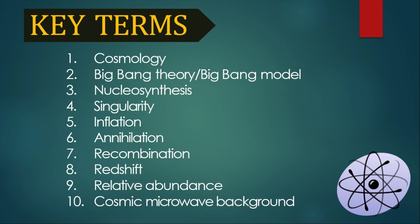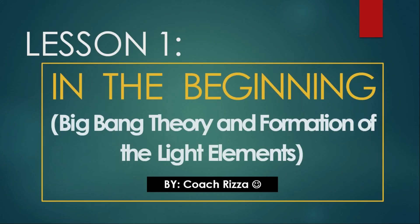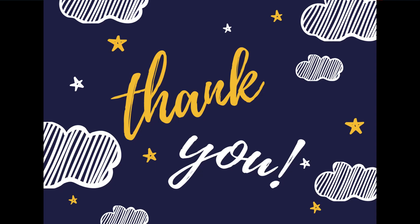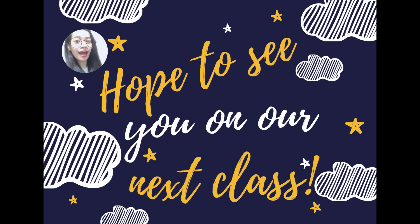Let's have a recap. Today we discussed cosmology and the Big Bang Theory or Big Bang model — how the universe evolved according to the Big Bang Theory. We also looked into the stages: singularity, inflation, nucleosynthesis, recombination, and annihilation. And we covered the three evidences that prove the Big Bang Theory: redshift, relative abundance, and the cosmic microwave background. Thank you very much for listening. Hope to see you in my class!